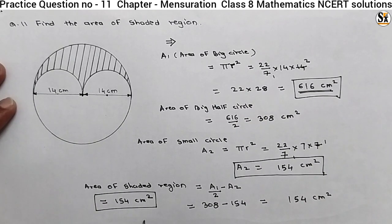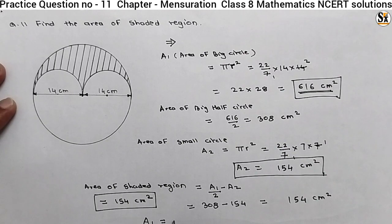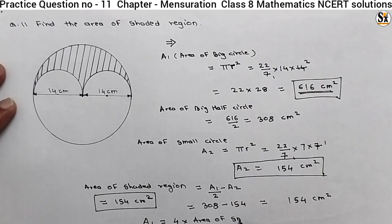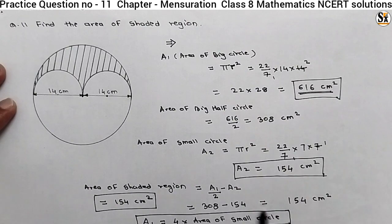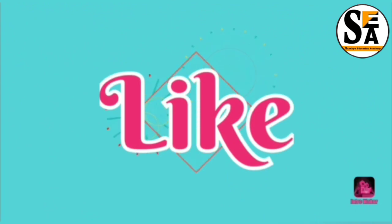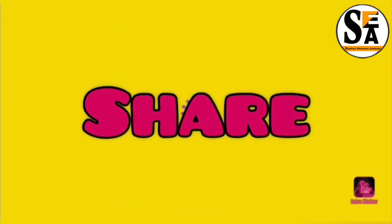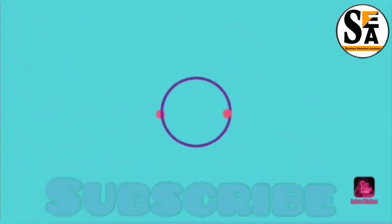So I will write here: A1 is equal to 4 times the area of the small circle. Why is this relation there? Because the radius of the big circle is double the radius of this half circle. This is all for this video. We will meet again in our next video. Do learn, do enjoy. Thank you.